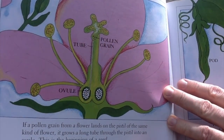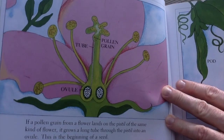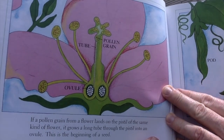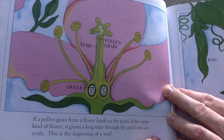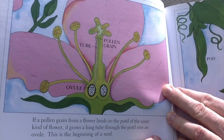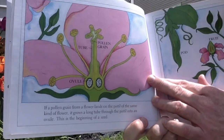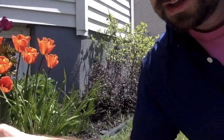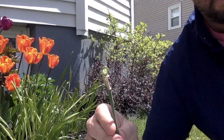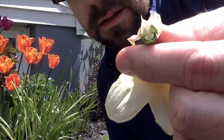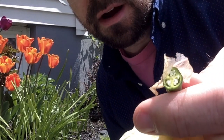If a pollen grain from a flower lands on the pistil of the same kind of flower, it grows along a tube through the pistil into an ovule. This is the beginning of a seed. We can see those — if I cut open our daffodil right down here, look, there they are.